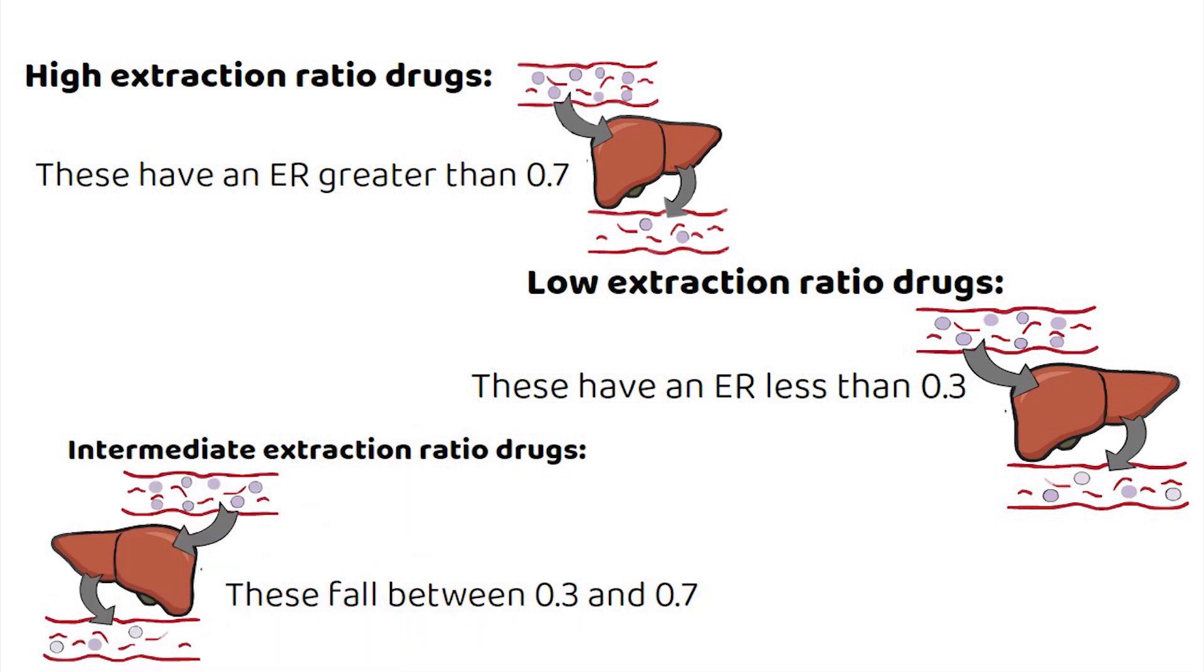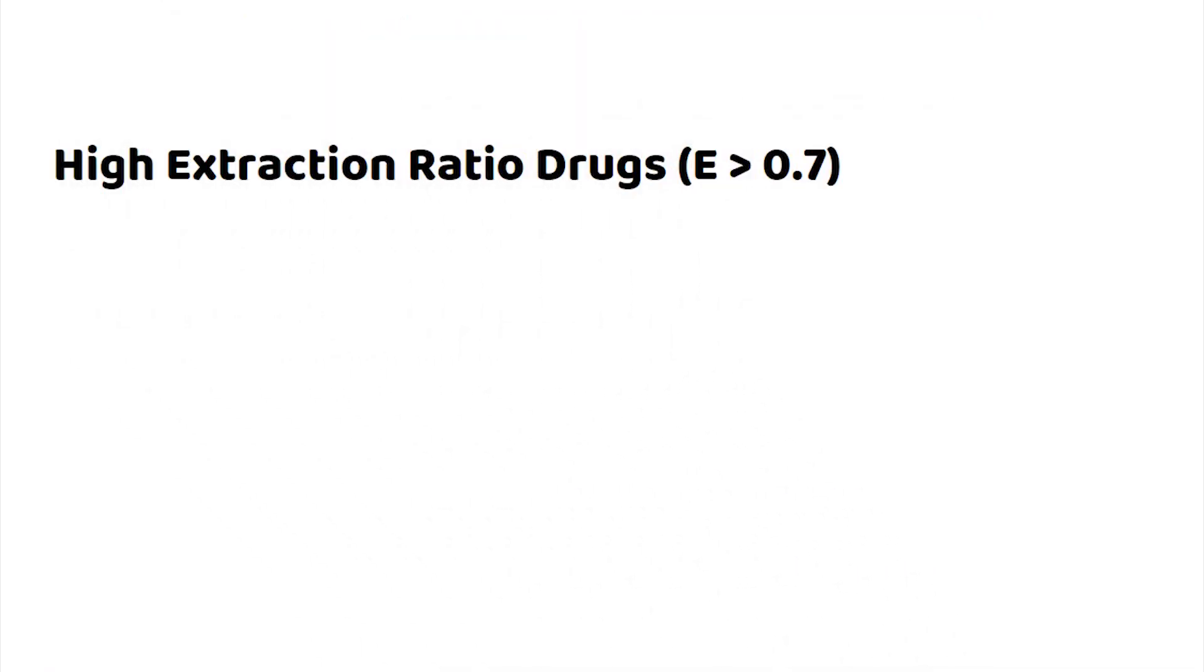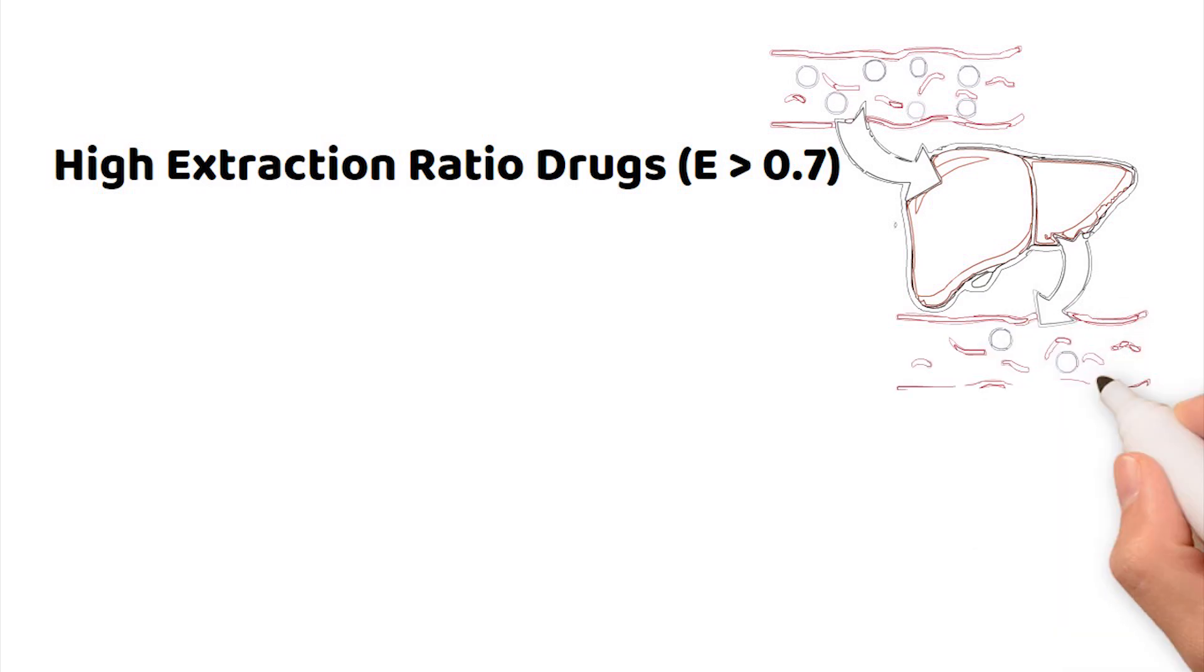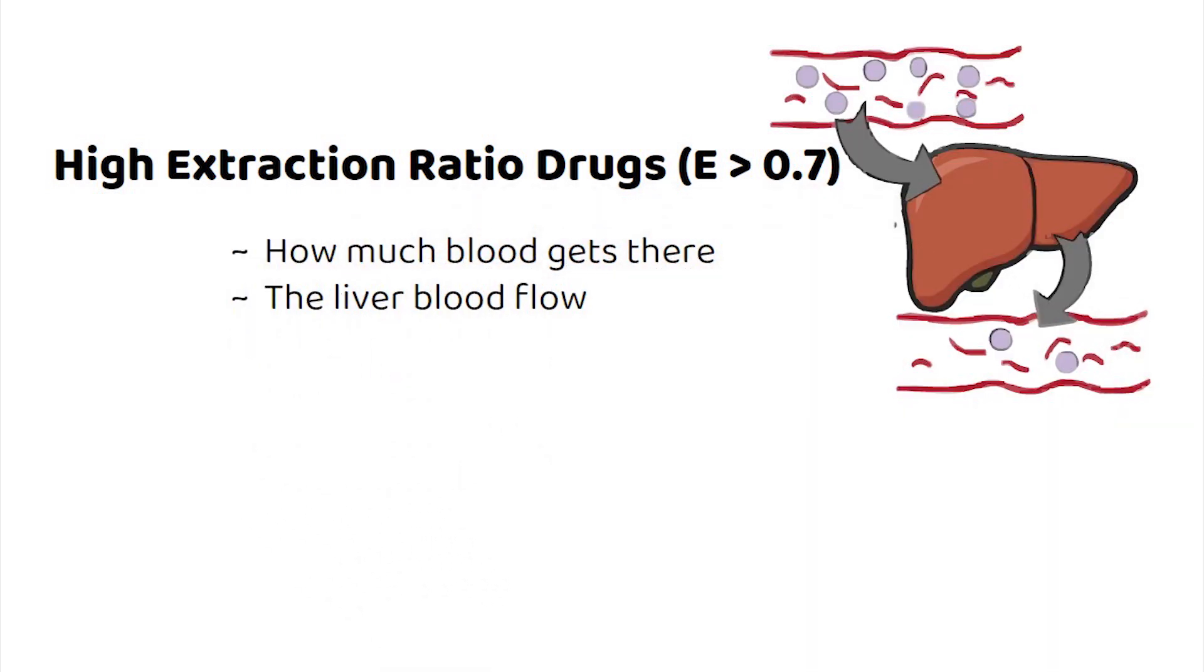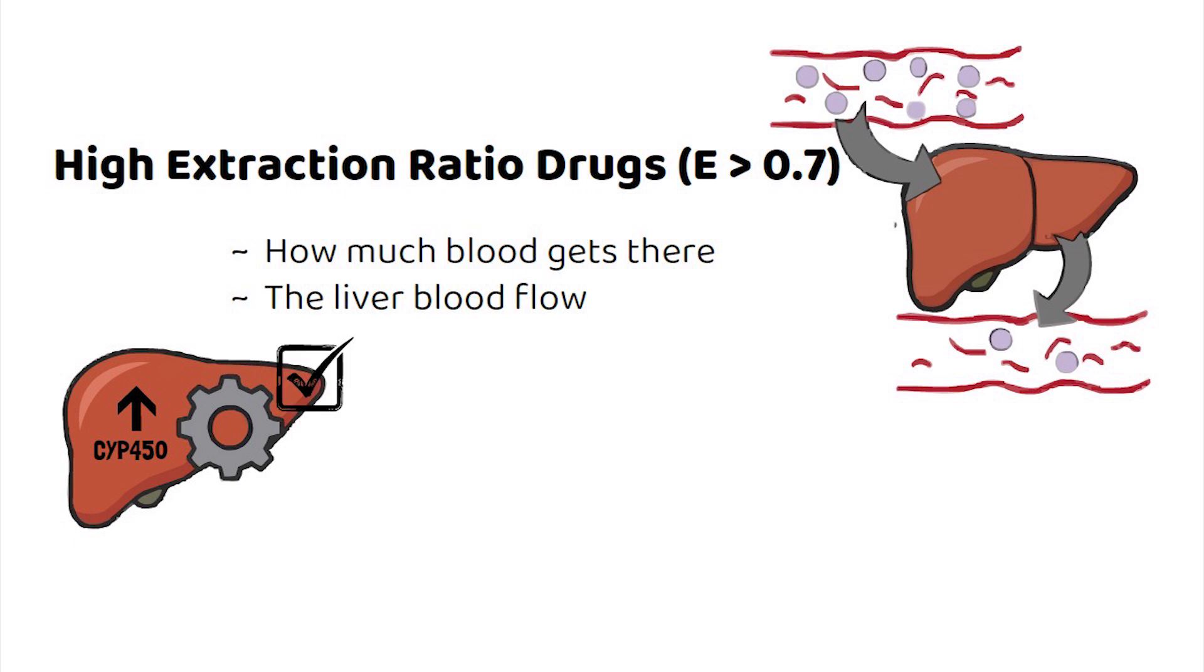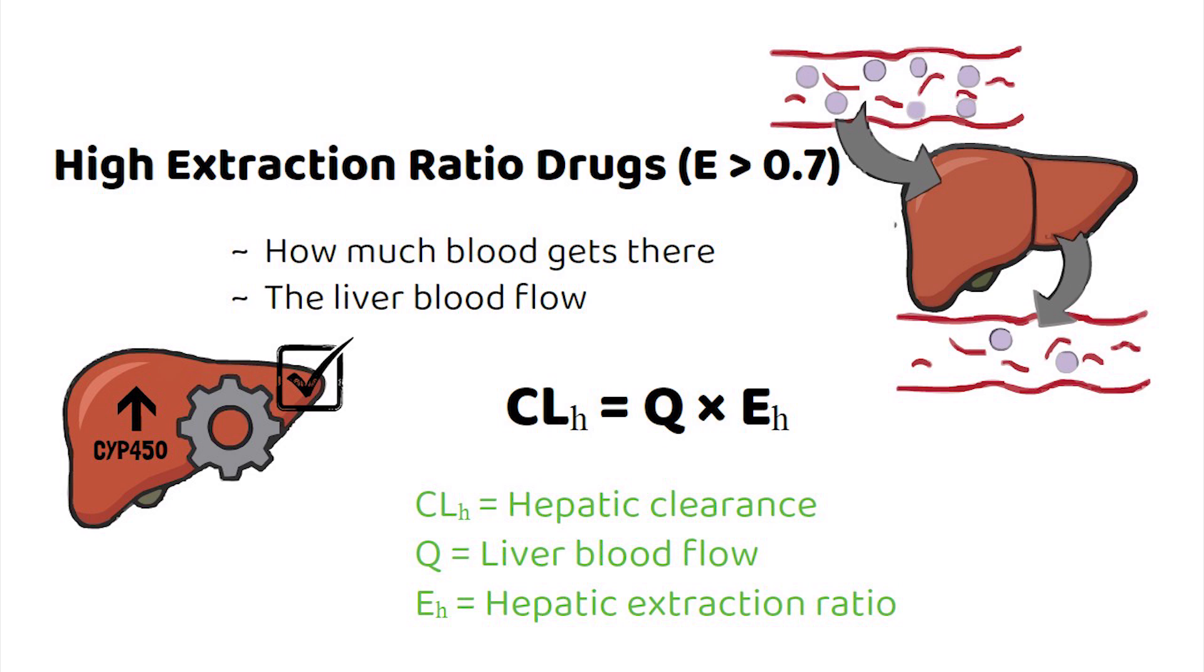For high extraction ratio drugs, since the liver extracts the drug so well, the only real limiter is how much blood gets there or the liver blood flow. Even if you increase enzyme activity, it doesn't matter much as they're already clearing the drug maximally. Therefore, hepatic clearance for drugs with high liver extraction ratio can be represented by the product of liver blood flow and the extraction ratio as shown on the screen.